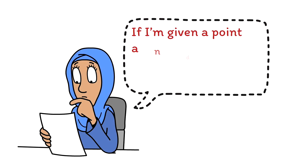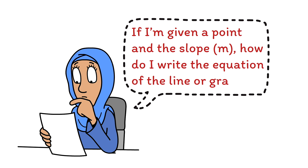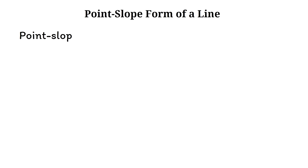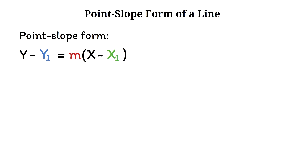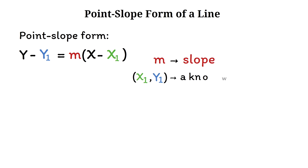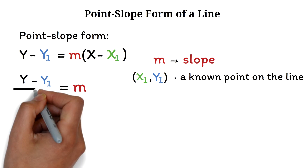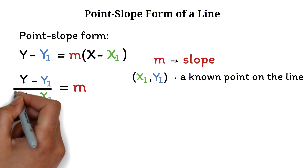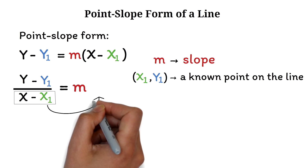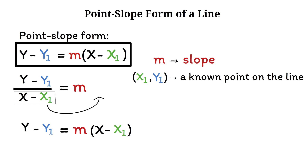What if you're given a point on the line and the slope, and you need to write or graph the equation? In that situation, we use another important form called the point-slope form: y minus y1 equals m times (x minus x1), where m is the slope and (x1, y1) represent the coordinates of a known point on the line. This form is especially helpful when you already know the slope and at least one point.